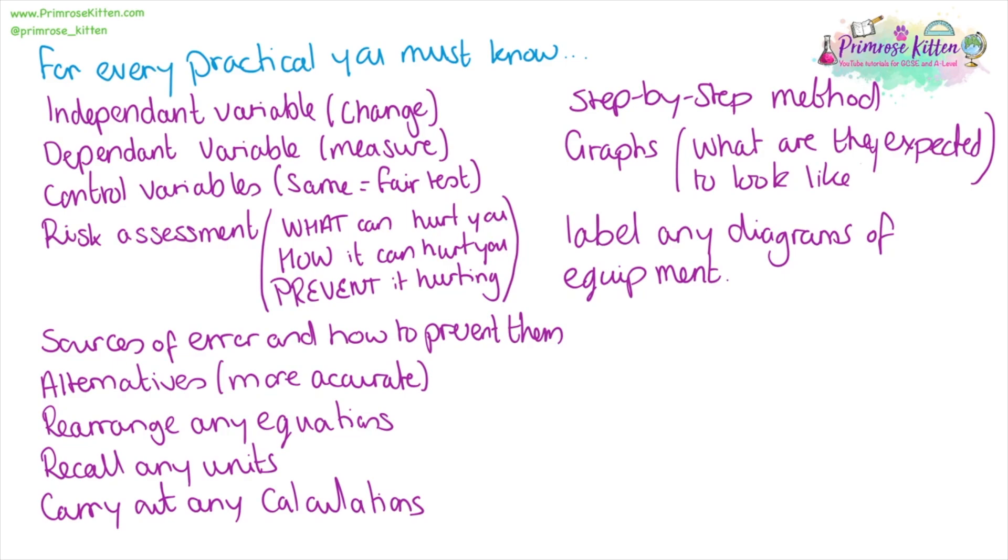Sources of error could be measuring from the wrong distance in the spot. Alternatives could be things like gas chromatography, thin layer chromatography or even using analytical techniques such as mass spectrometry to identify what is in a sample.